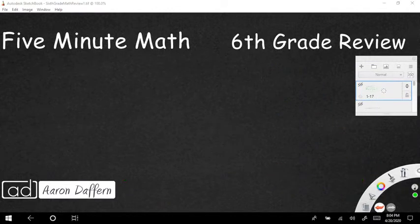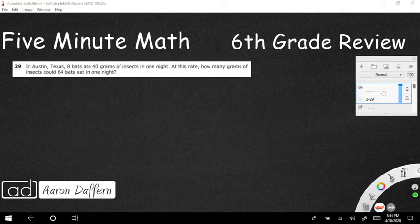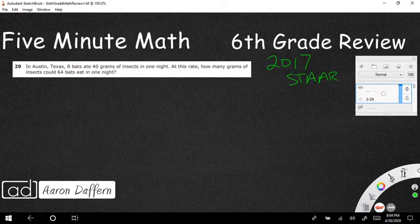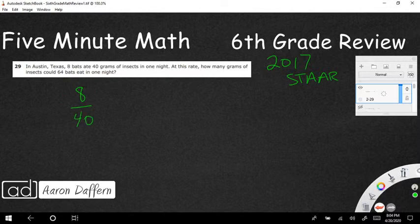So that was fairly quick. Let's take a look at our second one. This is the 2017 release STAR test. When you see a question like this, this is number 29. That means it was a free response, a griddable response. So in Austin, Texas, 8 bats ate 40 grams of insects in one night. So we're going to get another ratio here. I'm going to write it as a fraction, just like I did last time. You want to make sure you always put your labels in here when we're dealing with ratios because you don't know whether the missing number is going to be the numerator or the denominator. 8 bats and then 40 grams.